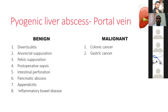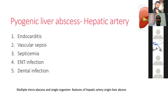Portal vein origin: benign etiologies include diverticulitis, appendicitis, anorectal infection, pelvic infection, postoperative sepsis following intestinal perforation, pancreatic abscess, and inflammatory bowel disease. Malignant etiologies include any gastrointestinal malignancy causing perforation, with subsequent abscess formation spreading via the portal vein to produce pyogenic liver abscess. Hepatic artery spread can also cause pyogenic liver abscess.